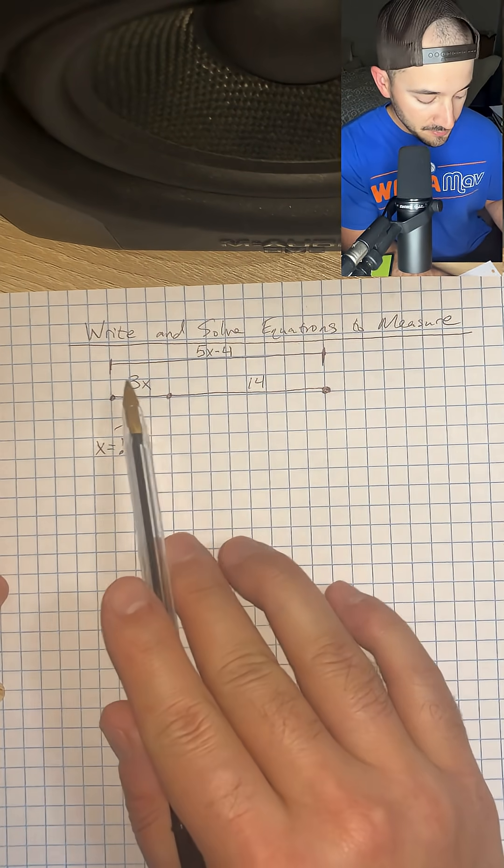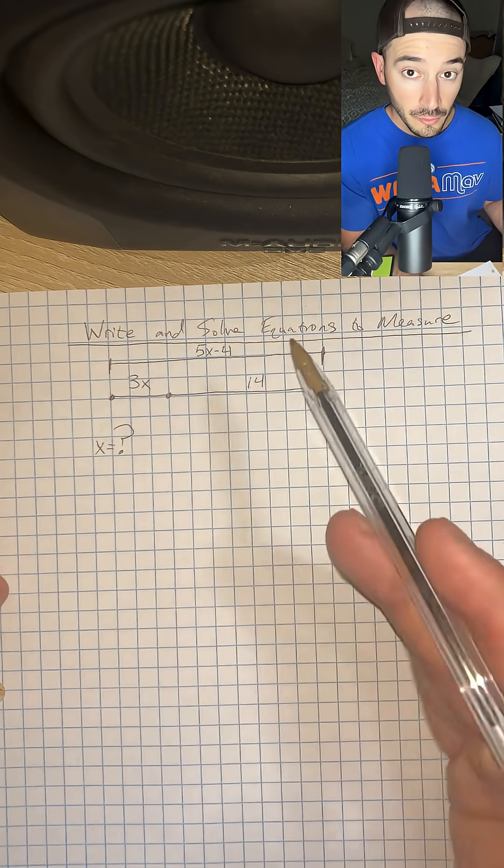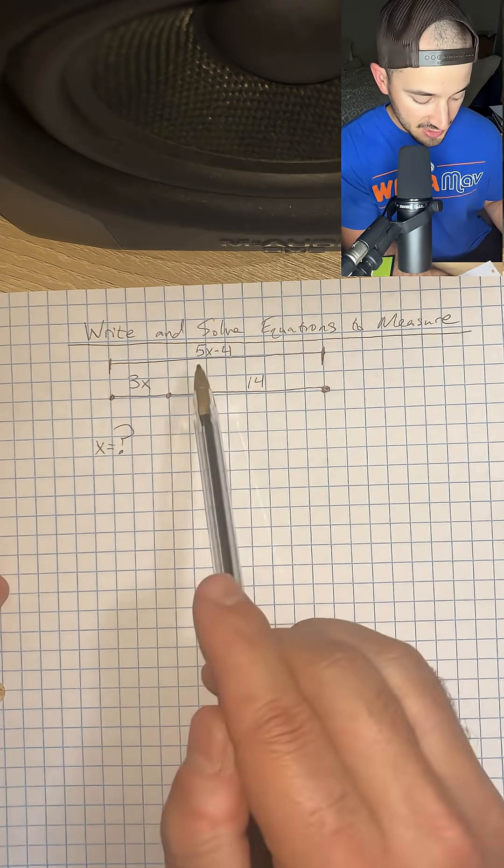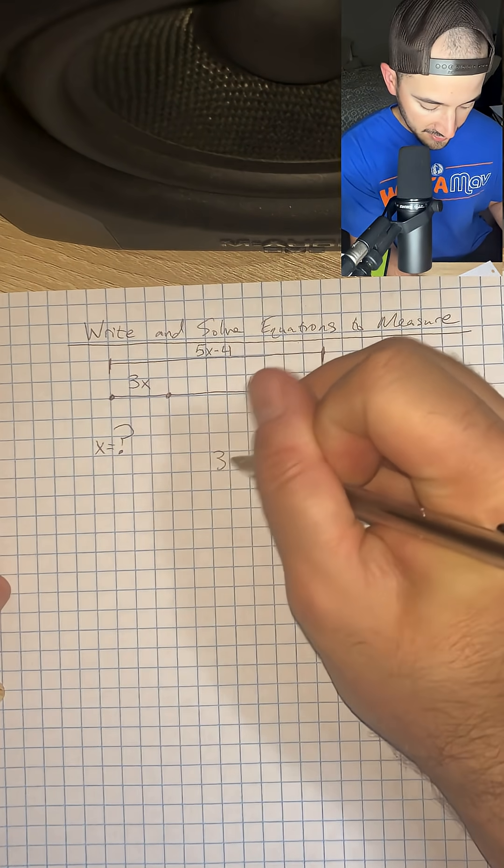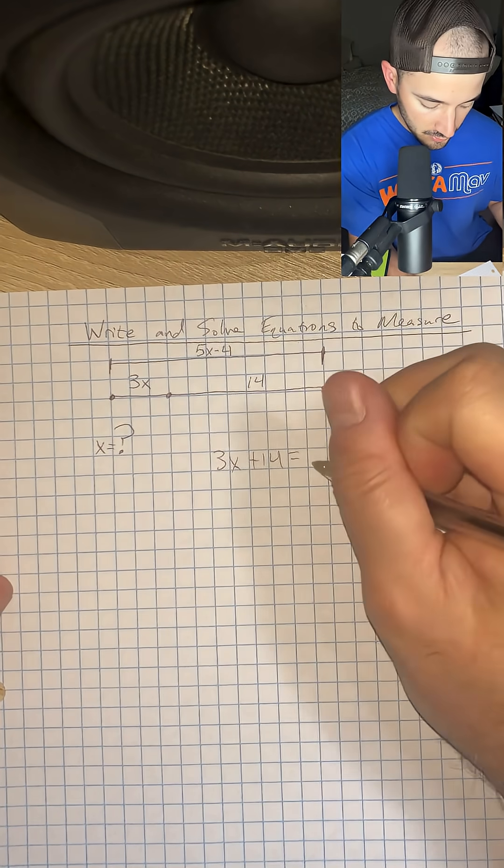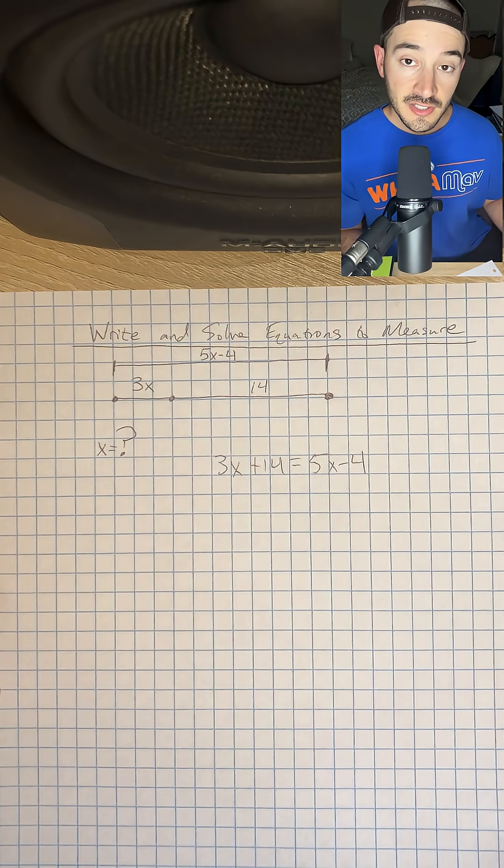Well, if we add up 3x and 14, that should be equal to the total length, which is 5x minus 4. So we're going to write that. We're going to do 3x plus 14 is equal to 5x minus 4, and now we can just solve this because it's an equation with variables on both sides.